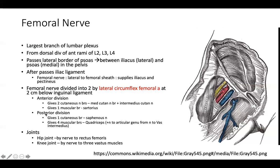The anterior division also gives one motor branch to the sartorius. The posterior division gives one cutaneous branch — the saphenous nerve — and four muscular branches to the four quadriceps nerves. The femoral nerve also supplies the hip joint and knee joint. The hip joint is supplied by the nerve to rectus femoris, and the knee joint is supplied by the nerve to the three vastus muscles. On the lateral side, the nerve-artery-vein arrangement is noted, with the saphenous vein above the pectineus.